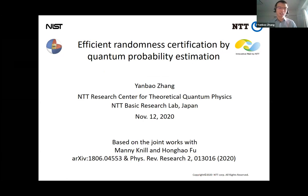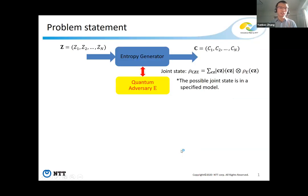Thanks for introducing. Hello, everyone. I'm going to present our recent work on certifying randomness by quantum probability estimating, joint work with Mani and Honghao. Let me briefly introduce the problem. We want to generate random bits using a device called entropy generator. We use the device multiple times, providing random input and getting output. When we run it, it may be correlated with a quantum adversary.